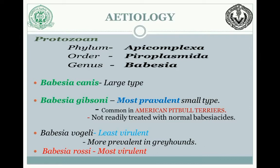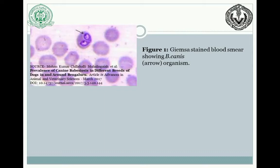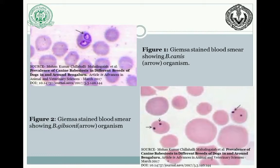Here is a picture showing the Giemsa-stained blood smear of Babesia canis. We can see that the size of the organism is large and paired. The second picture shows the small type organism — Babesia gibsoni — again on a Giemsa-stained blood smear.